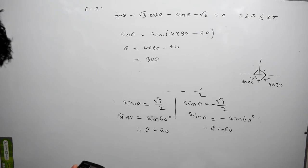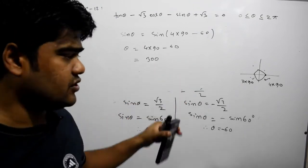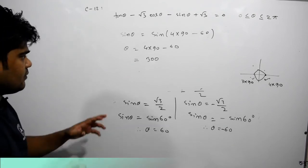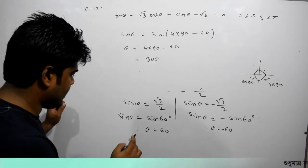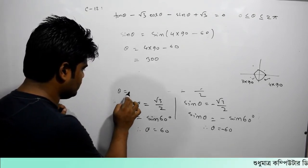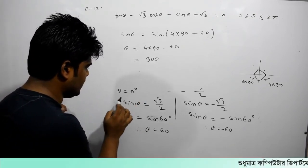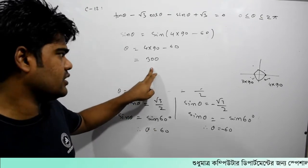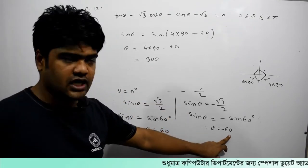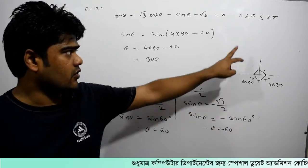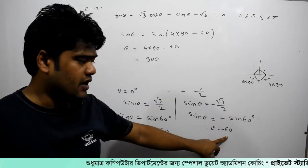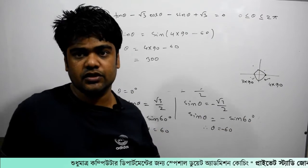Minus root 3 by 2 equals 0.86, the same value — that means 300 degrees. So theta equal to 0, theta equal to 300 degrees, and theta equal to minus 60 degrees, because minus 60 is equal to 0 in this context.